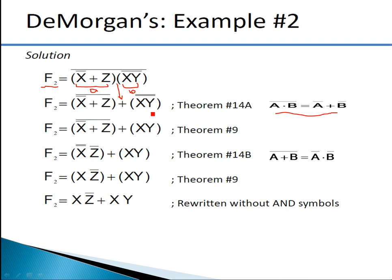So we have (x̄ + z)̄ + (xy)̄̄. The double bar on xy cancels, giving xy. Now apply De Morgan's second theorem to (x̄ + z)̄: break the line, change the sign — x̄ becomes x̄̄ = x, plus becomes dot, and z gets a bar. So (x̄ + z)̄ = x · z̄. Therefore f2 = xz̄ + xy. We can rewrite the equation without brackets: f2 = xz̄ + xy. This is the final simplification.